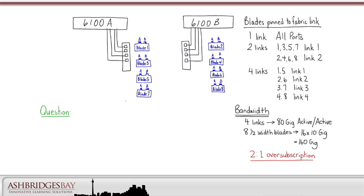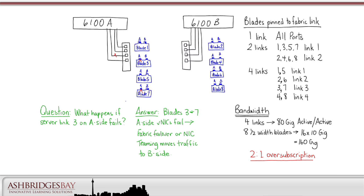In a four-server link configuration, what would happen if the third server link on the A side fails? The answer is that blades 3 and 7 would see their A side vNICs fail. Either fabric failover, which we'll discuss in a little while, or NIC teaming would have to be used to reroute the traffic to the B side.